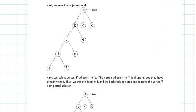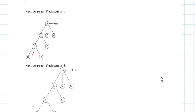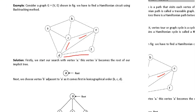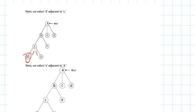So let us see: from C, we can go to D or E. C will connect to E. D will be a new node to visit. C is already visited, so we note that. So D is where we go next.